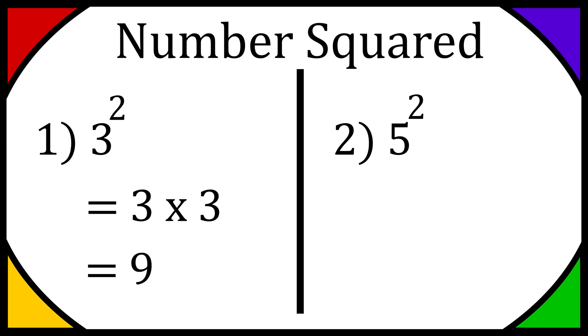So effectively what we're doing here is if you have the big number and then you see a squared, so a two on the top right-hand side, it means the number is going to be multiplied by itself.